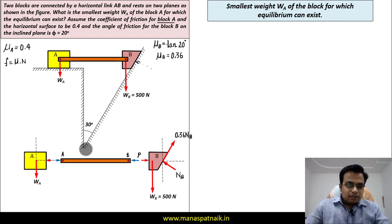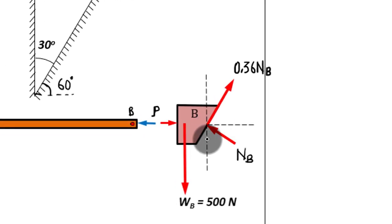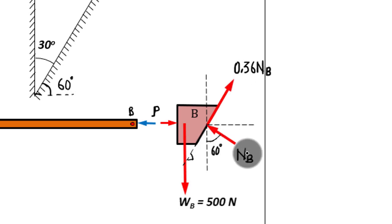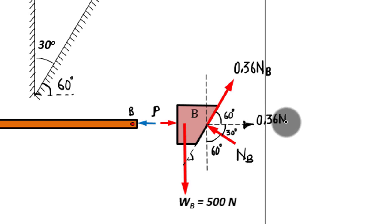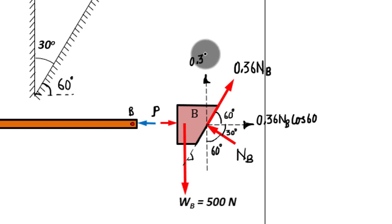The inclined plane makes an angle such that the angle with the horizontal works out to 60°. Therefore, the normal to the inclined surface and the vertical also have 60° between them. Extending the geometry confirms 60° at both positions. We can now resolve forces into X and Y components. The friction force 0.36 × N_B has a horizontal component of 0.36 N_B cos60° and a vertical component of 0.36 N_B sin60°.